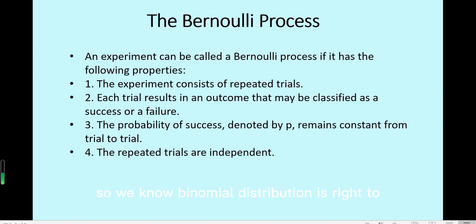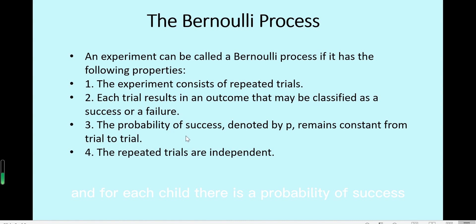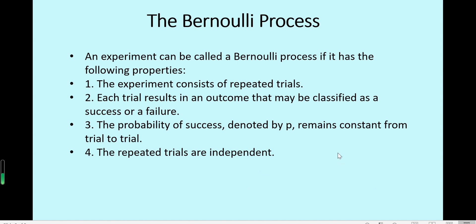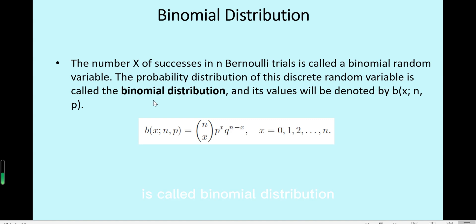Binomial distribution is related to a so-called binary process. An experiment can be called a binomial distribution if it has the following properties: the experiment consists of repeated trials, and each trial results in an outcome classified as a success or a failure. For each trial, there is a probability of success called P that remains constant from trial to trial, and the repeated trials are independent from each other. The number of successes in N binomial trials is called a binomial random variable, and the probability distribution of this discrete random variable is called the binomial distribution.